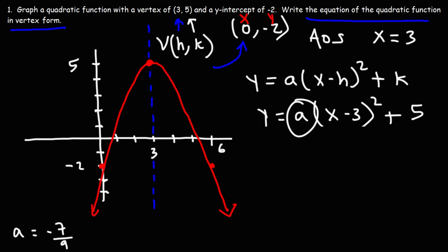So now let's replace a with the value that we just got. So it's -7/9 times (x - 3)² + 5. So this is the equation of the quadratic function in vertex form.